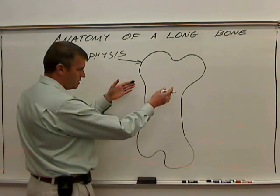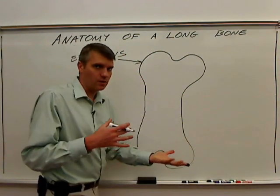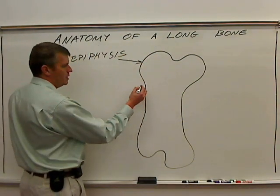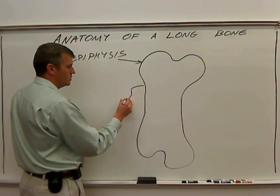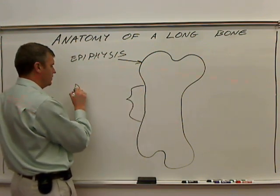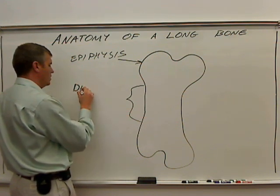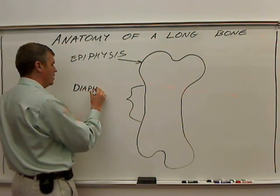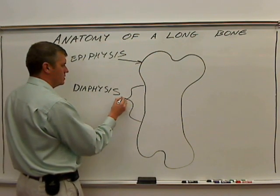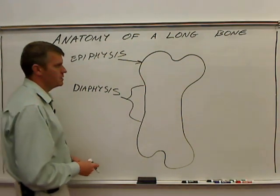Between these two thickened parts there's a shaft — sometimes it's a longer shaft, sometimes it's a shorter shaft. That shaft region is called the diaphysis. So we've got epiphysis, we've got diaphysis.